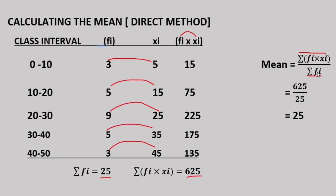Summation of fi (total frequency) is 25. So mean equals 625 divided by 25. Cancelling, 625 divided by 25 equals 25. So the mean by direct method is 25.